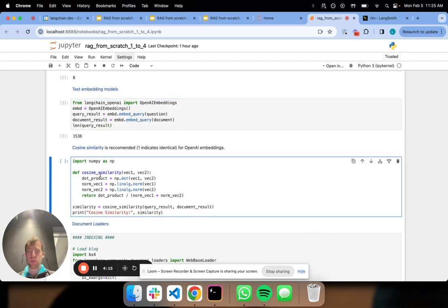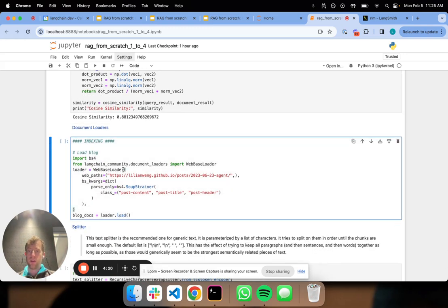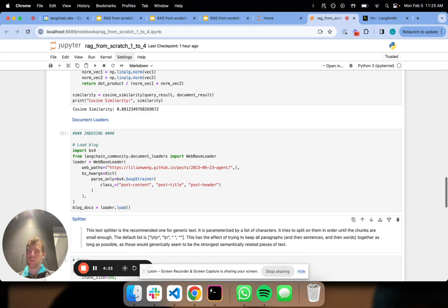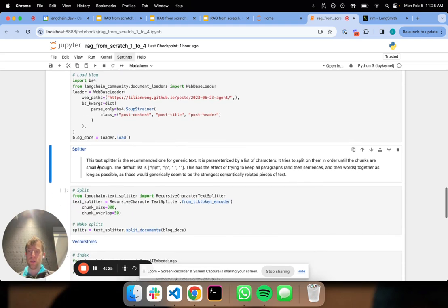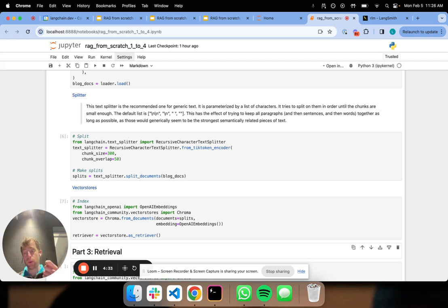I can do things like cosine similarity to compare them. I can load some documents, split them, and index them just like we did before. But under the hood, what we're doing is taking each split, embedding it using OpenAI embeddings into this vector representation, and that's stored with a link to the raw document in our vector store. Next, we'll see how to actually do retrieval using this vector store.